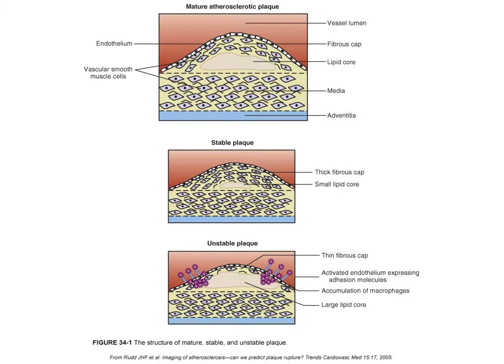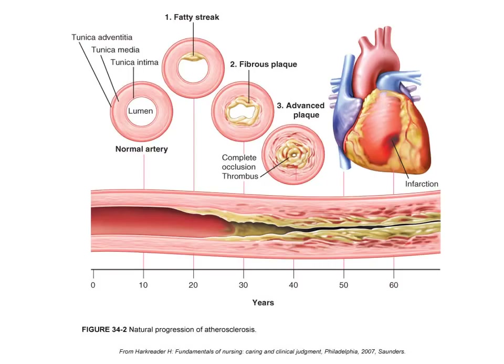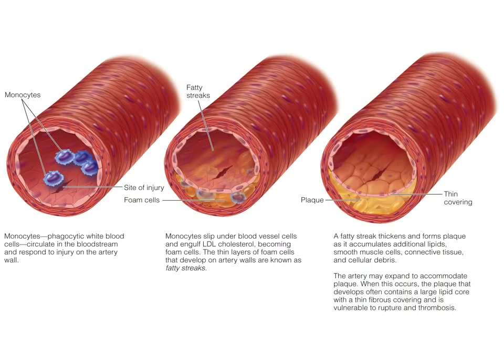Here you can see this development: a mature atherosclerotic plaque. The problem is that it could rupture. We have a stable plaque with a much smaller core, and an unstable plaque that is very likely to rupture. We can see a timeline by age as blood vessels begin filling with fat — starting as a fatty streak, then fibrous plaque, then advanced plaques, becoming narrower and narrower with age. We can also see our monocytes, the development of fatty streaks, and the eventual development of plaques.